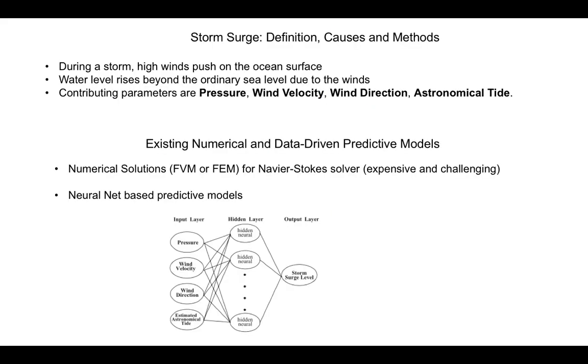We'll start off with the definition of a storm surge. Essentially during a storm when high winds push on the ocean surface, we see that there's a significant increase in the water level beyond that of the natural sea level and this is caused due to the invading winds on the ocean surface.